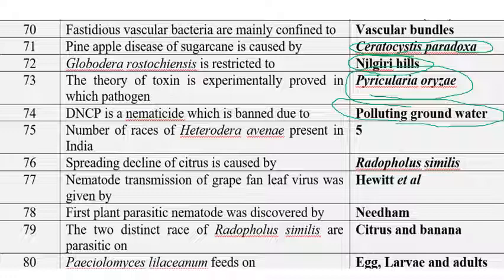The number of races of Heterodera avenae present in India is five. Heterodera avenae is a nematode with five races present in India.